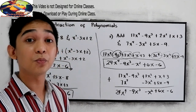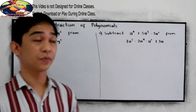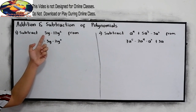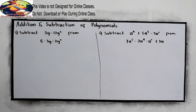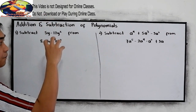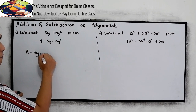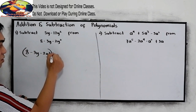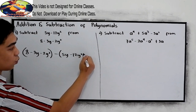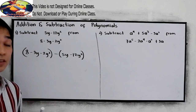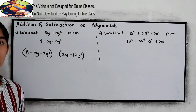Now for example 3, let's have subtraction. Subtract 5y minus 12y squared from 8 minus 3y minus 2y squared. So we need to subtract the first from the second. Copy 8 minus 3y minus 2y squared, then subtract 5y minus 12y squared. In subtraction, it is very important to write our parentheses — unlike in addition, do not forget your parentheses.